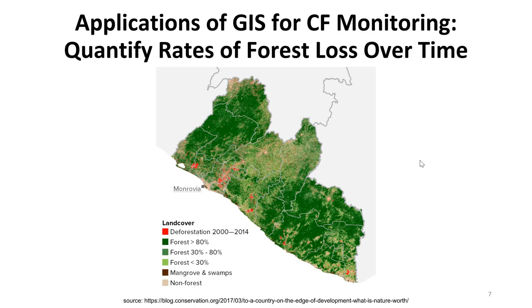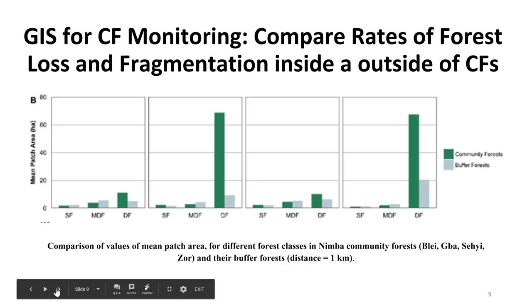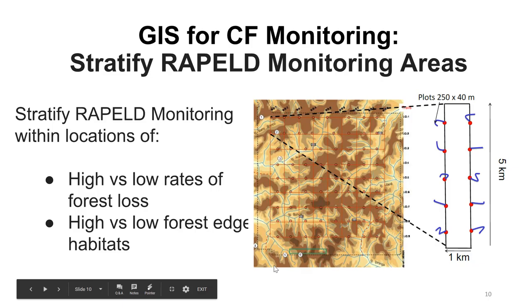Why is this important for community forest monitoring? Well one thing that we can do with GIS is quantify rates of forest loss over time. This example of the map below shows deforestation from 2000 to 2014, which is shown in red, and then you have forested areas that are greater than 80% forested in the dark green. We can also compare forest loss among different community forests within the area, and we can compare rates of forest loss and fragmentation inside and outside of community forests.